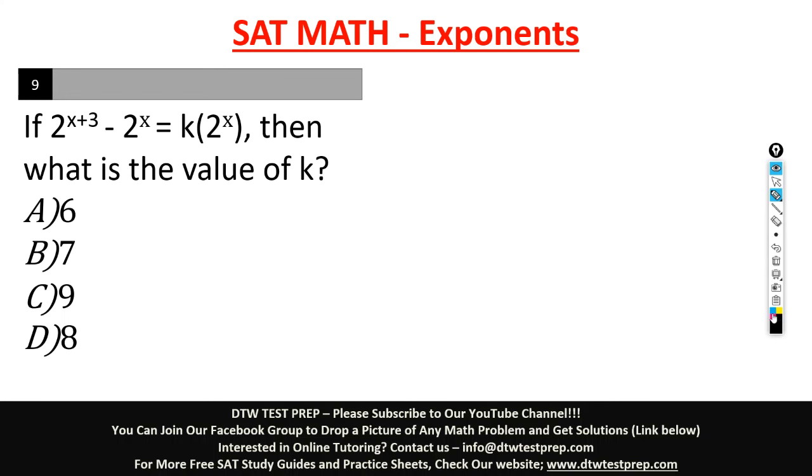Okay, so let's quickly do this together. So here, we have 2 raised to x plus 3 minus 2 raised to the power of x equals k in parentheses 2 raised to the power of x here. We can simplify this. We can break it down because now we're trying to cancel out this x because we're looking for k.